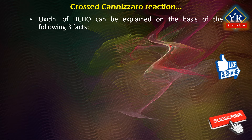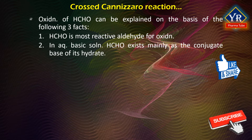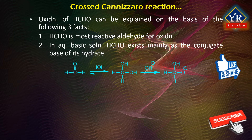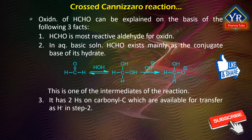Oxidation of formaldehyde can be explained on the basis of the following three facts. Number one, formaldehyde is the most reactive aldehyde for oxidation. Number two, in aqueous basic solution, formaldehyde exists mainly as the conjugate base of its hydrate. This is one of the intermediates of the reaction. And number three, it has two hydrogens on the carbonyl carbon which are available for transfer of hydride ion in step two.